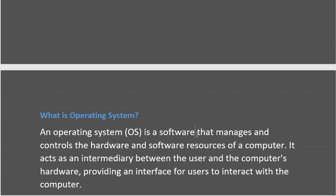System software is a software that provides a platform for other software. So, an operating system is a software that manages and controls the hardware and software resources of a computer. By this definition, we can conclude that the operating system is a resource manager, which manages and controls resources of our computer system.